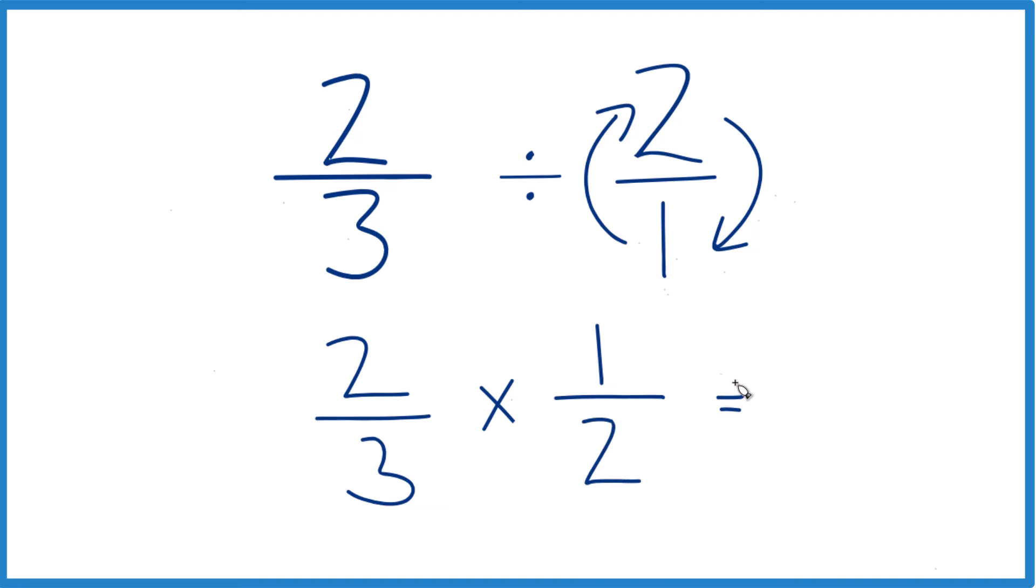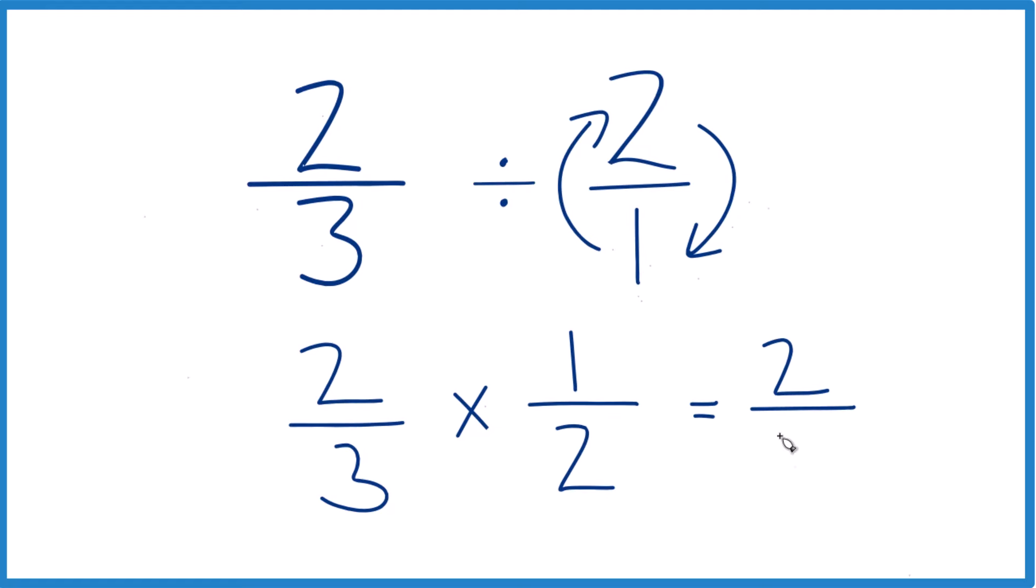We do our multiplication, and when we multiply fractions, we multiply the numerators, two times one, that's two, and then the denominators. Three times two, that's six.